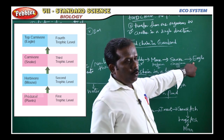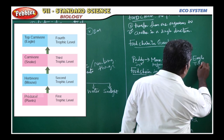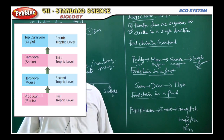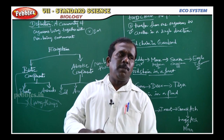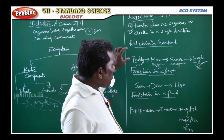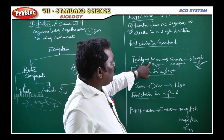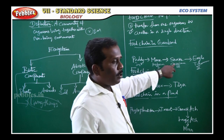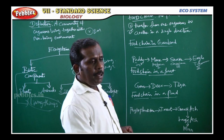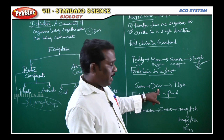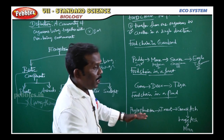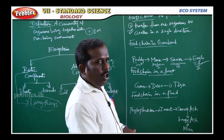Last is eagle — the top carnivore. Eagle is the fourth trophic level. So, trophic level: the position of an organism in a food chain is called a trophic level. Paddy (plant) is the first trophic level; mouse (herbivore) is the second; snake (carnivore) is the third; eagle (top carnivore) is the fourth trophic level. You can apply the same in a forest food chain: grass (first), deer (second), tiger (third trophic level).